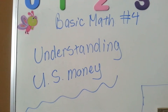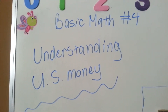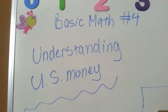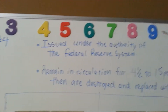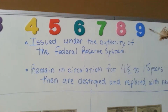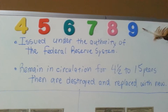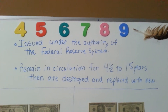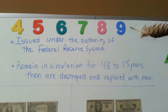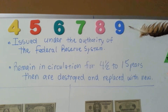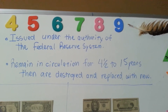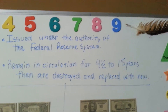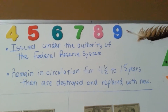Basic math number four, understanding U.S. money. United States money is issued under the authority of the Federal Reserve System. The bills remain in circulation for four and a half to fifteen years, depending on the denomination, and then they're destroyed and replaced with new bills.